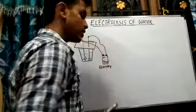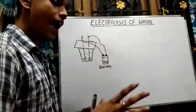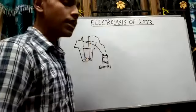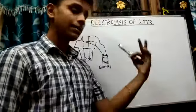When one of the pencil is attached to the positive terminal, it becomes the anode. When the other pencil is attached to the negative terminal, it becomes the cathode.